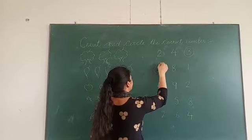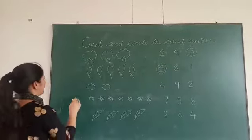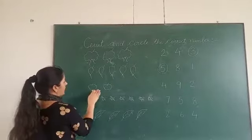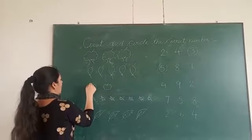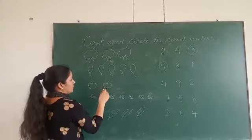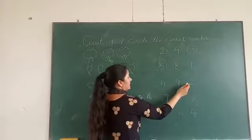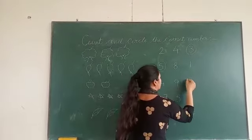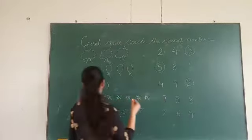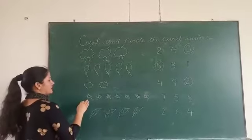Next is apples. How many apples are here? One, two. Where is two? Yes, here is two.